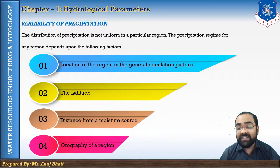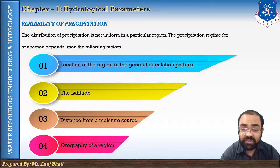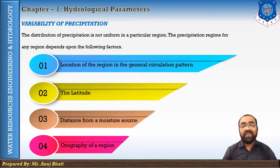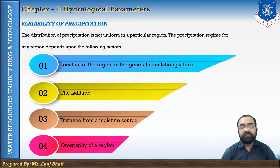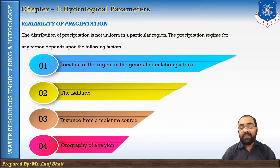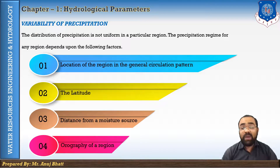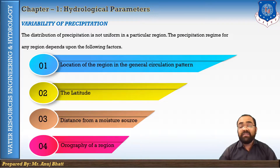Talking about latitude: near the equator, due to higher temperature, evaporation will be more, and thus precipitation is heaviest near the equator. It decreases towards the high latitudes. So we can say regions at the equator have the heaviest precipitation, while as latitude gets higher and higher, precipitation decreases.